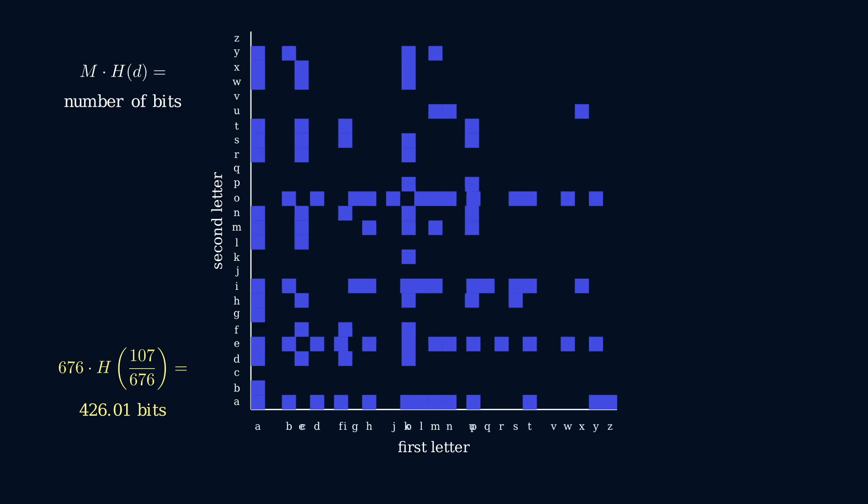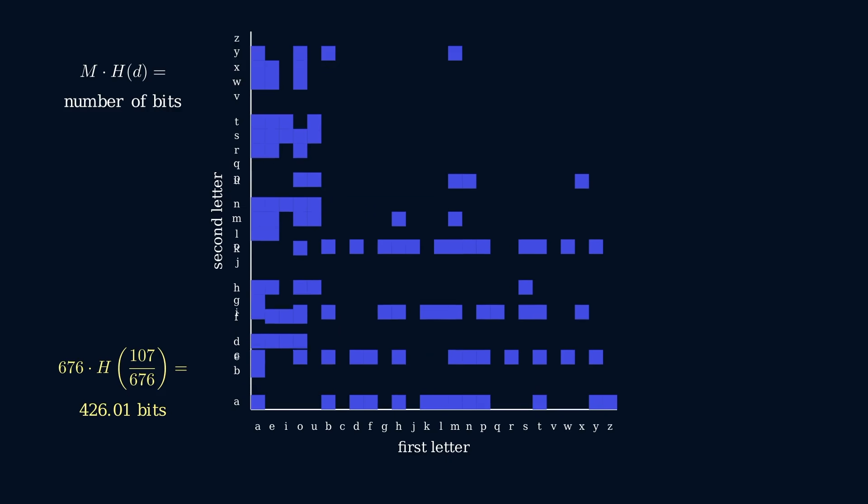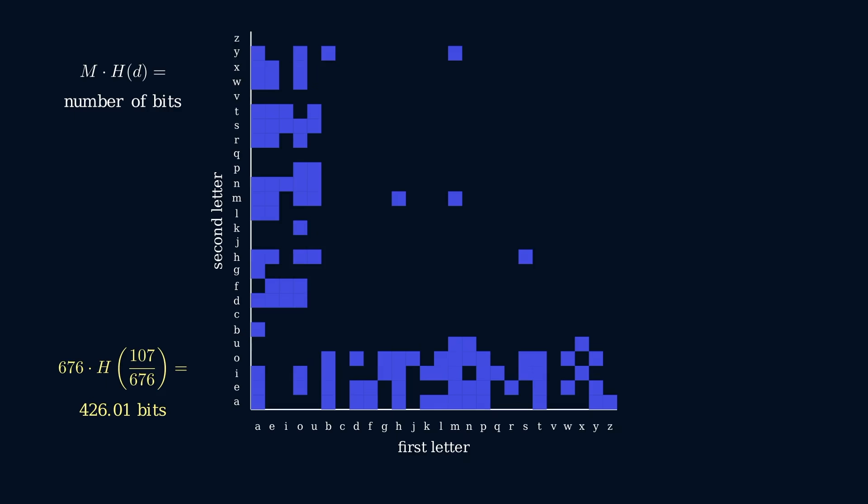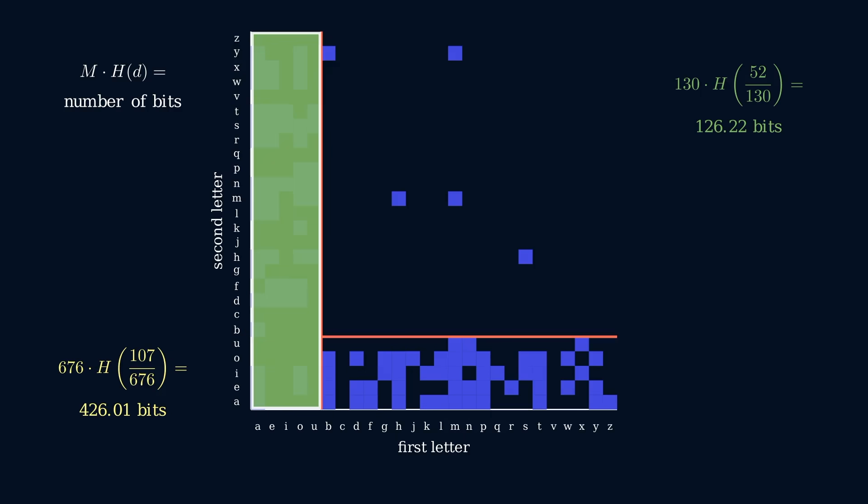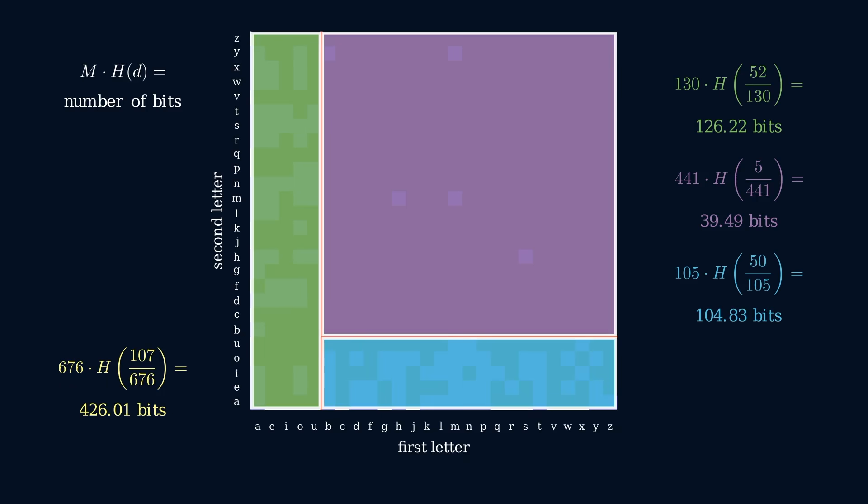Look what happens when we reorder the alphabet so that vowels come first. As you can see, most of the words are now clustered together in some relatively high-density regions. We can cut up the space along the boundary of these regions and then separately encode the subsets, giving a total of 270.5 bits.